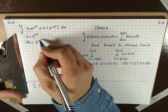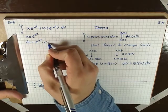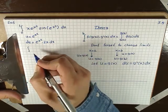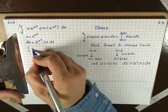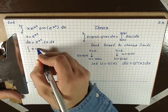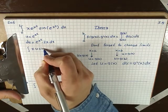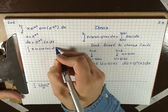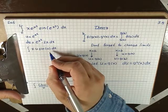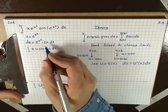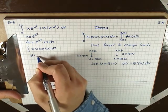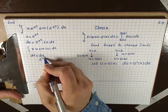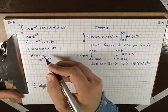Applying the chain rule, the derivative of x² is 2x dx. Now rewrite the integral: x·e^(x²) is just u, sine of u, times dx. We can't have x's and u's in the same integral, so let's algebraically solve for dx. From du = e^(x²)·2x dx, we get dx = du divided by e^(x²)·2x. Substitute this dx in.